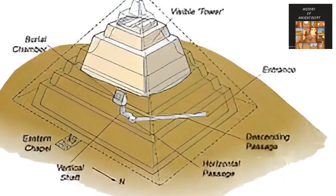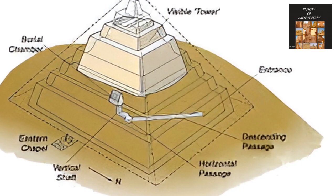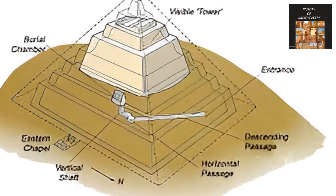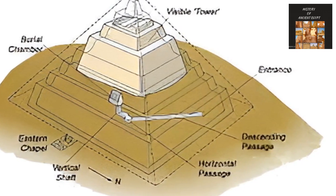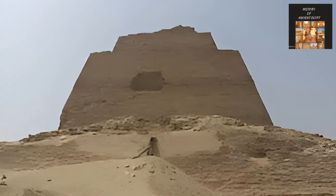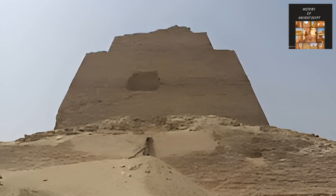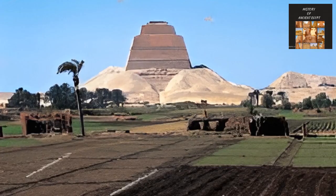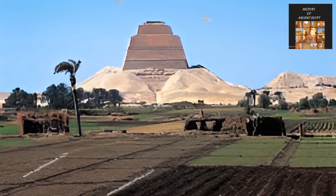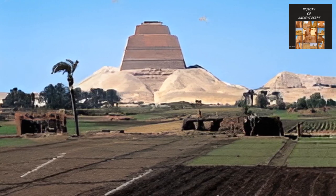The pyramid consists of a core or central tower surrounded by seven layers of limestone. Each layer had its external covering, and the gaps between layers were filled. An eighth layer was added to complete the pyramid's appearance, and it was covered on the outside with fine limestone. When completed, the pyramid's height was 92 meters, the base length was 144 meters, and the slope angle was 51 degrees.